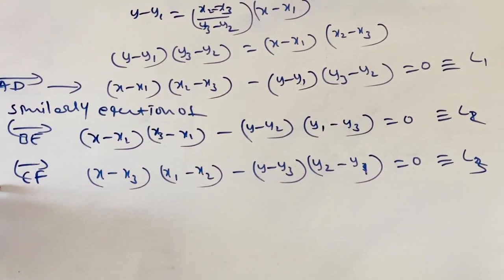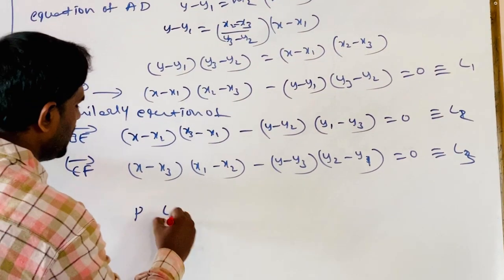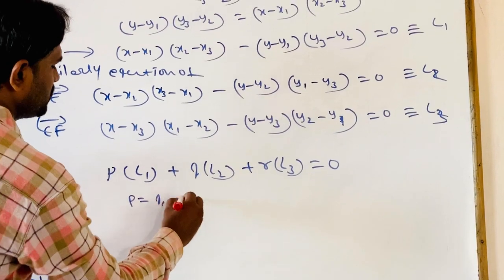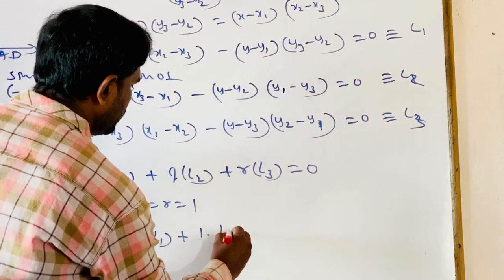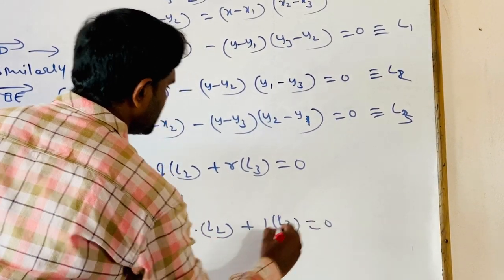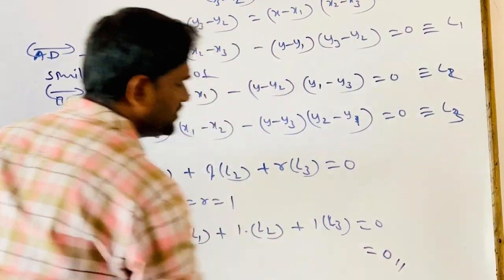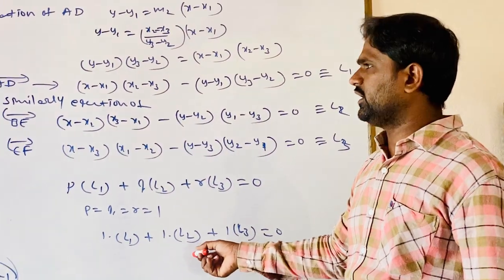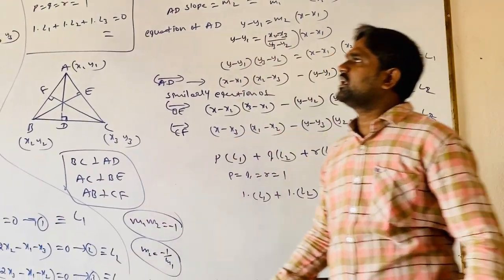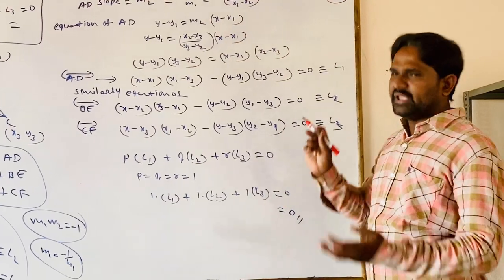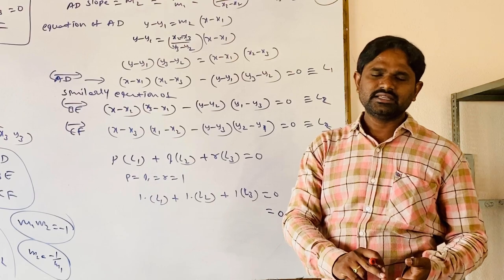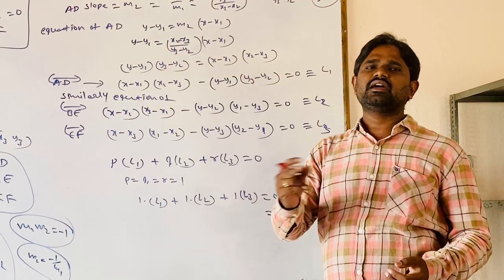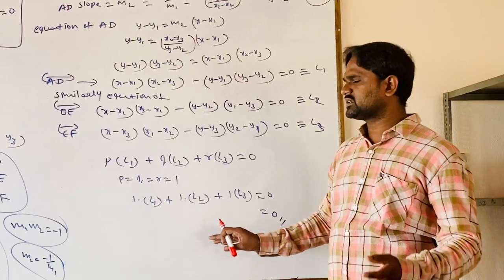Using the condition P·L1 + Q·L2 + R·L3 = 0 where P = Q = R = 1, we get 1·L1 + 1·L2 + 1·L3 = 0. Adding these three equations gives us 0, so the altitudes in a triangle are concurrent. In a triangle, the medians, altitudes, perpendicular bisectors, internal angular bisectors, and one internal and two external angular bisectors are all concurrent — meaning they intersect at a point.